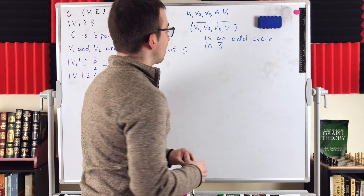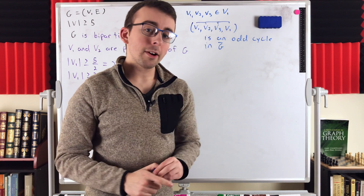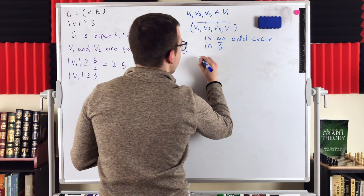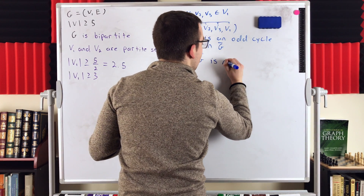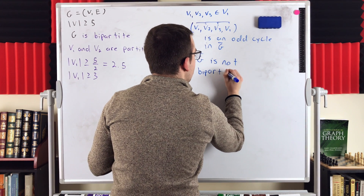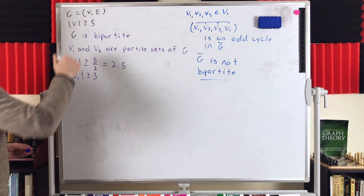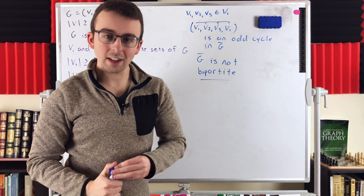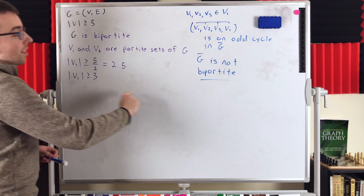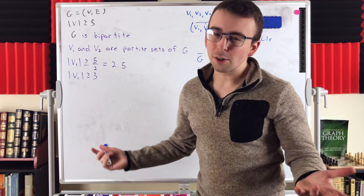That basically completes the proof. There's an odd cycle in G complement, so by the theorem that a graph is bipartite if and only if it has no odd cycles, since G complement has an odd cycle, G complement is not bipartite. Thus, for a graph G with at least five vertices, at most one of G or G complement can be bipartite. If one of them is bipartite, the other cannot be. That's the corollary.